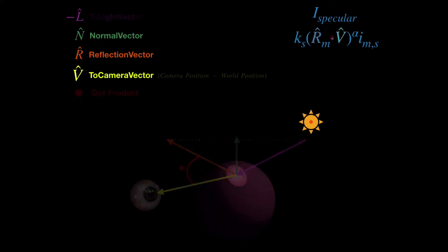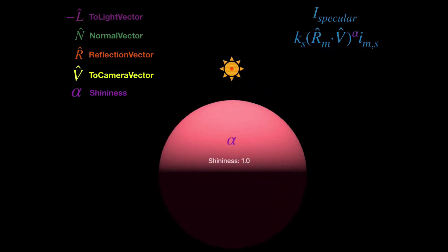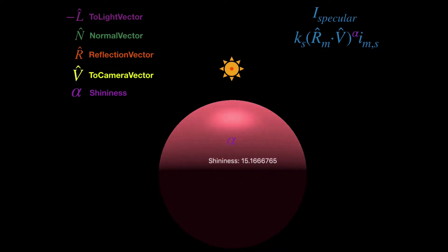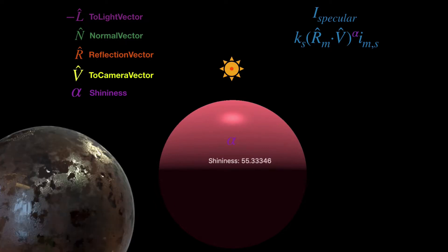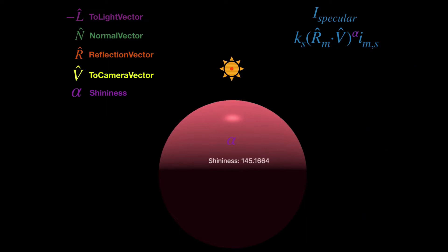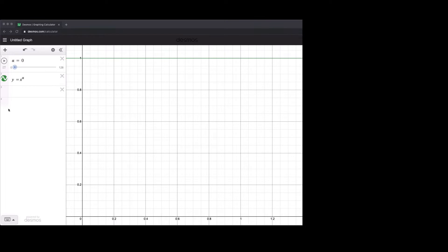There's one last thing: shininess, represented by alpha. Right now the shine spreads across the whole thing — like the matte paint finish on the Corvette. As we increase the shininess, that matte finish becomes more wet-looking or plasticky, and that little bright circle gets smaller and smaller. If we take R dot V to the power of a shininess factor, it changes. I've got Desmos graphing calculator here with alpha set to zero — our shininess is currently zero, no shine.